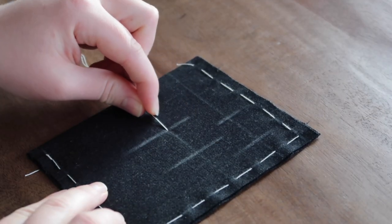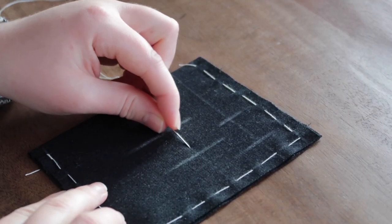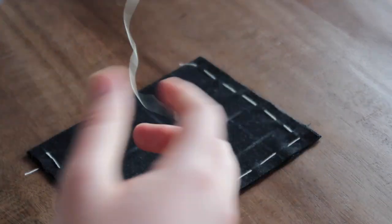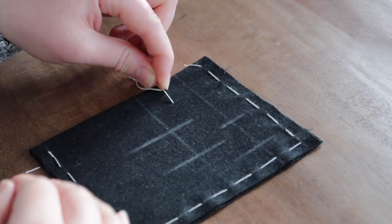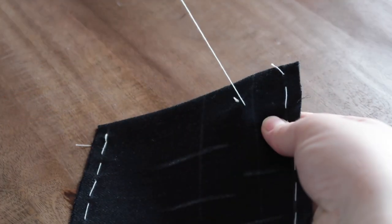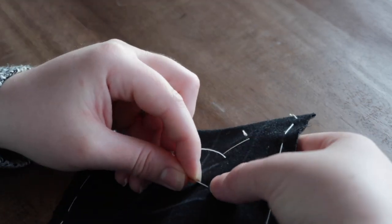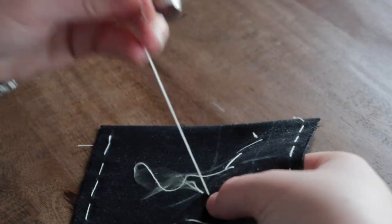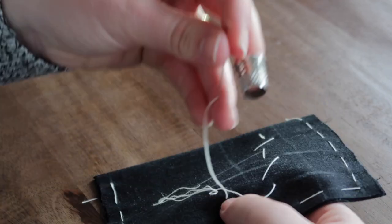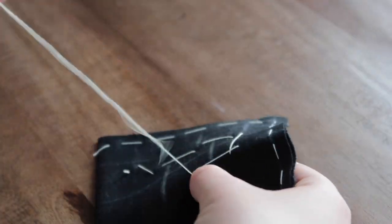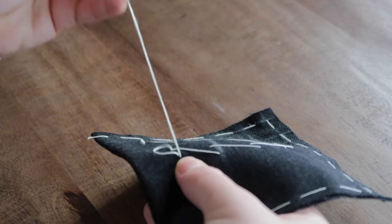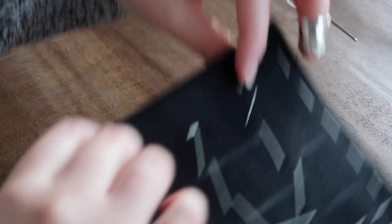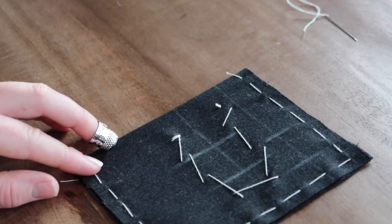So if I'm going to sew my buttonhole right here, I'm going to with my basting thread, I'm going to just stitch around a bit, just to hold everything in place. Now I'm ready to move on to the next step.